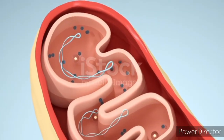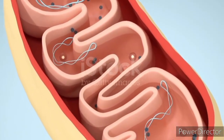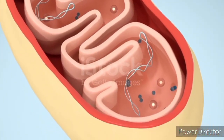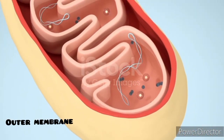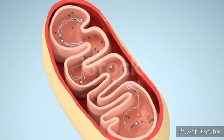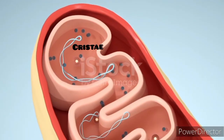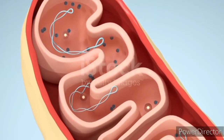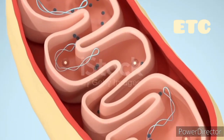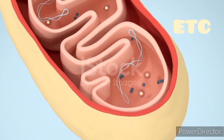Structure. Mitochondria have a double membrane structure, an outer membrane and an inner membrane folded into structures called cristae. The inner membrane holds the electron transport chain, where ATP production occurs.